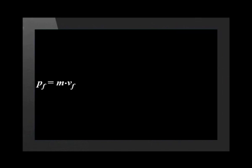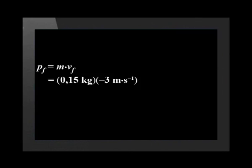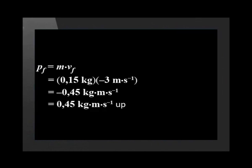Now calculate the momentum after the bounce. Final momentum p subscript f equals mass times final velocity v subscript f. This equals 0.15 kilograms times negative 3 meters per second, which equals negative 0.45 kilogram meters per second. This means 0.45 kilogram meters per second upward. As a vector diagram, it would be an arrow pointing up.